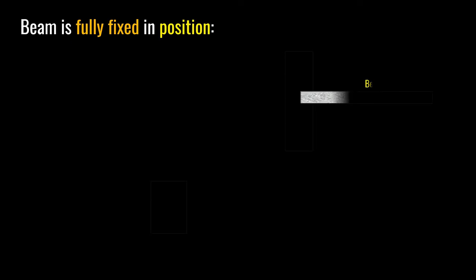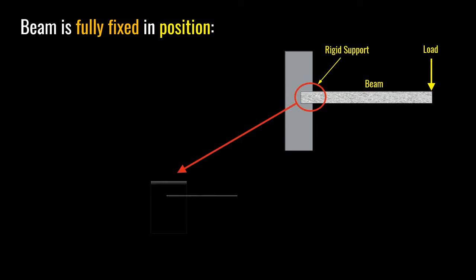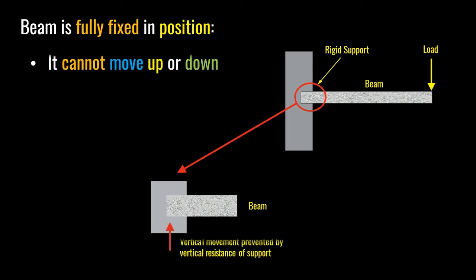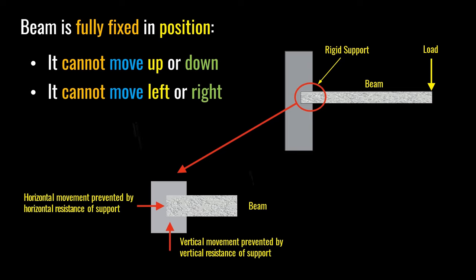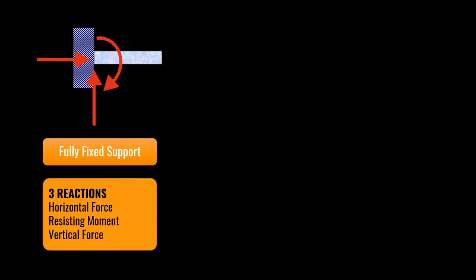A fixed support, or a rigid support, is firmly fixed at the end. It cannot move in the vertical direction, it cannot move in the horizontal direction, and it cannot rotate. This means it has three reactions: vertical, horizontal, and resisting moment.